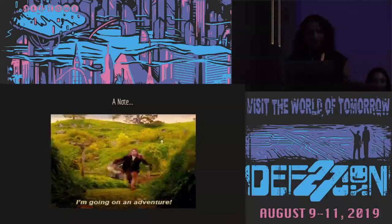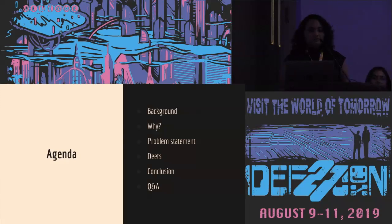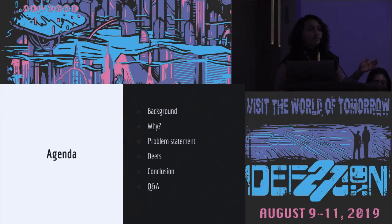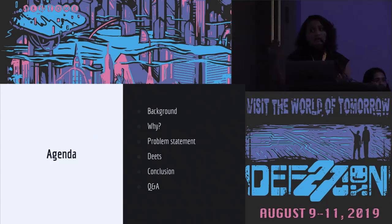The agenda for today: we're going to cover the background of what authentication is, then address why this is a problem. That leads us to the problem statement. We'll get into more detail about a bunch of protocols and schemes. Then we'll drive out a conclusion around why this is a systems problem and what patterns we observed across different authentication schemes. We want to have some time for Q&A towards the end as well.